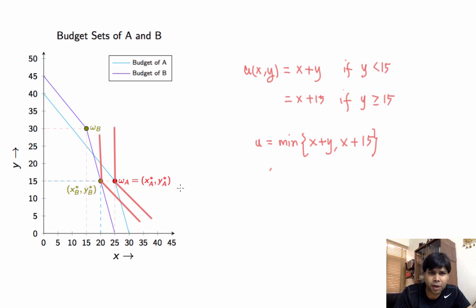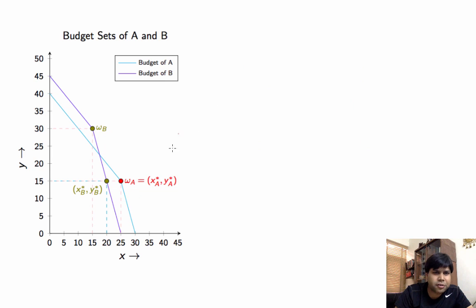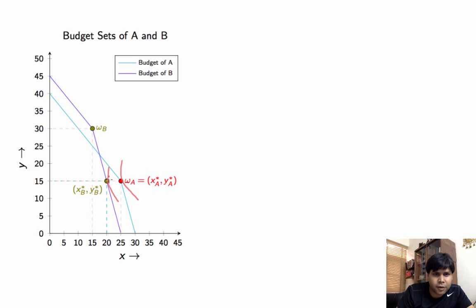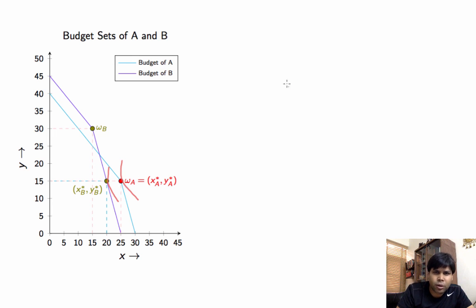We are now interested in indifference curves that are smooth — that do not have any kinks. We want our utility function to be such that the indifference curve is tangential to B's budget set at XB* YB* and tangential to A's budget set at XA* YA*. That means the slope of the indifference curve should be minus 3 at XB* YB* and somewhere between minus 1 and minus 3 at XA* YA*.